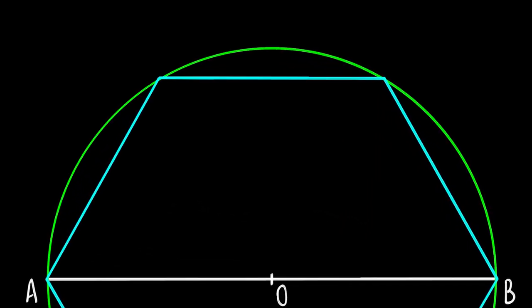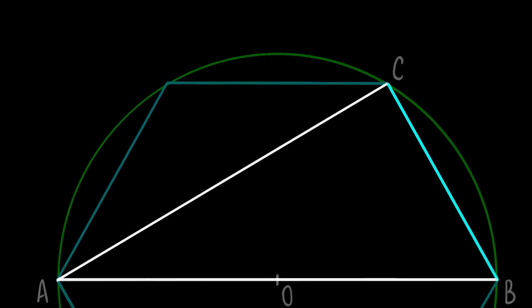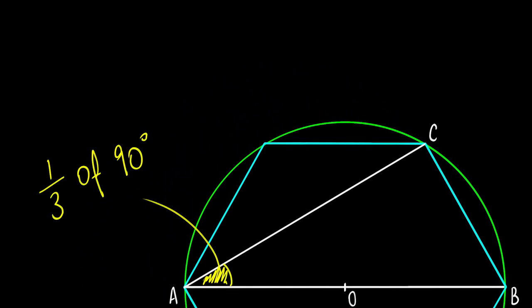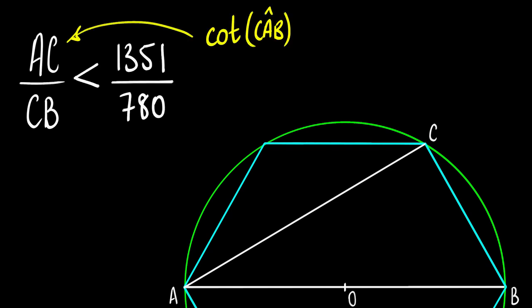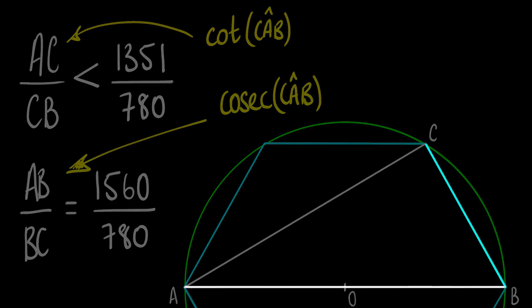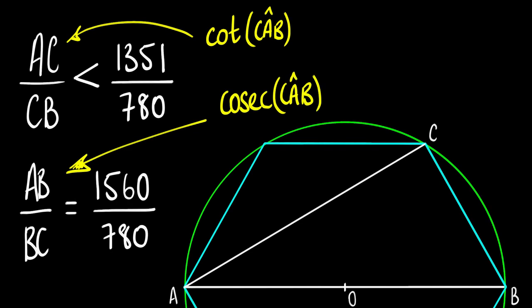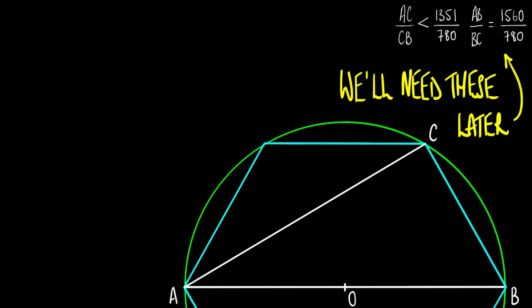So that's the upper bound of pi sorted. What about the lower bound? Let's start with our semicircle again and make a triangle ABC with angle CAB equal to that one-third of a right angle again. So we know, and Archimedes knew, that the ratio of AC to CB was root 3 to 1, which again, to get an exact ratio, Archimedes said it was less than 1,351 to 780, and the ratio of AB to BC is 1,560 to 780, or 2 to 1.